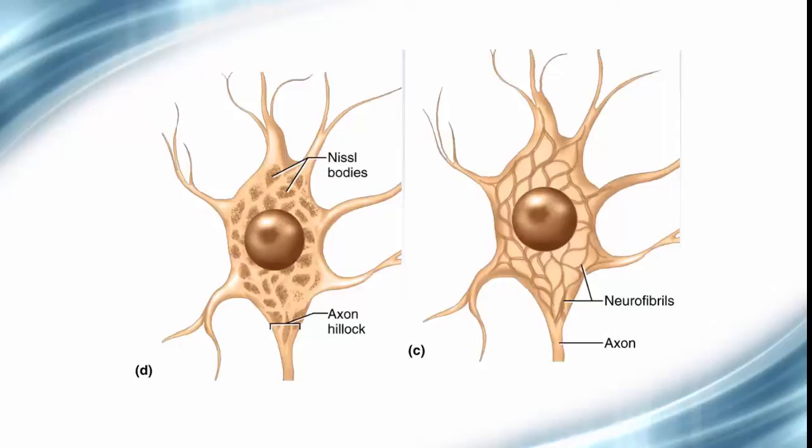Think of the cytoskeleton as the highway system that transits all of the necessary cellular components all throughout the cell. The axons can get up to 4 feet long, and this takes an incredibly efficient transport system to be able to get the cellular parts to where they're needed.